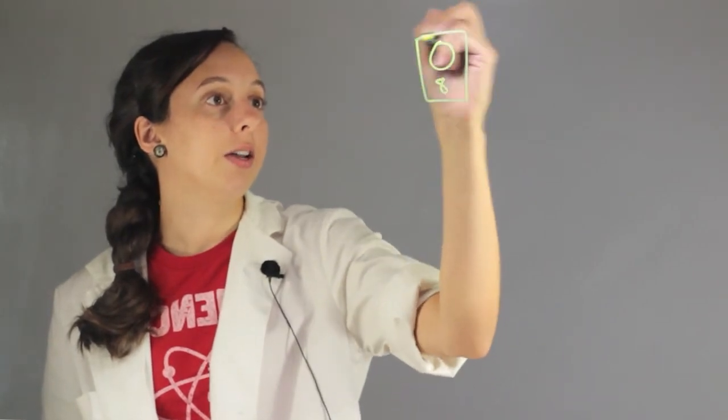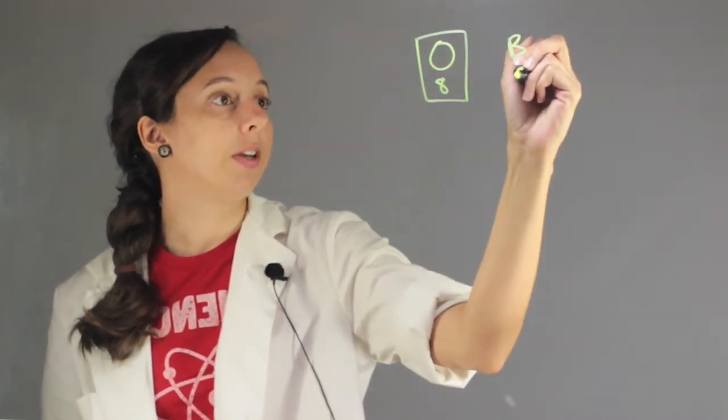Okay, so oxygen, if you look on the periodic table, is element number eight, and boron is element number five.